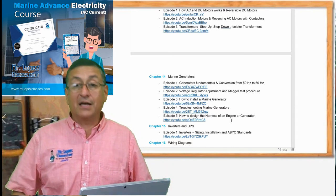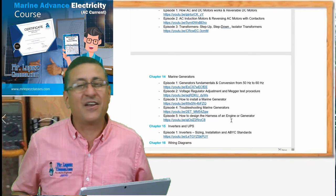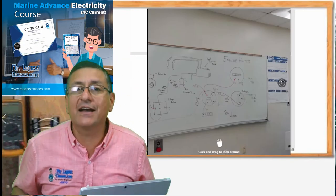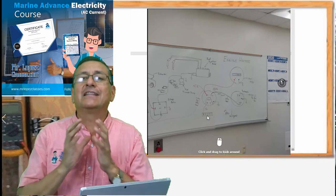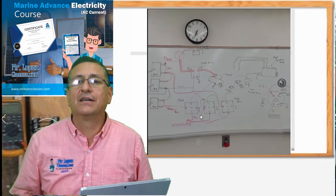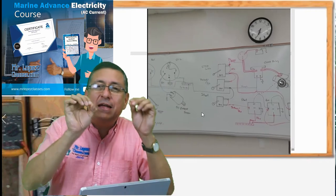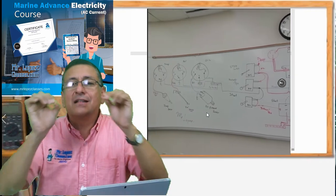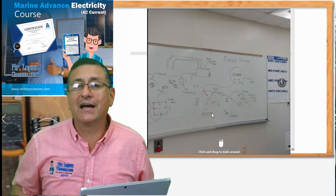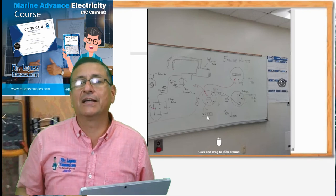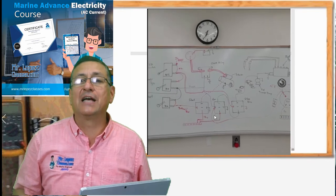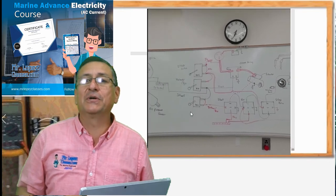Episode number five is another wonderful wiring diagram. We are going to do the harness for a diesel engine or gas engine — the harness for a generator — wire per wire, the harness and the schematic on a big whiteboard. We are going to create the complete harness for a generator. I hope you enjoy that episode.